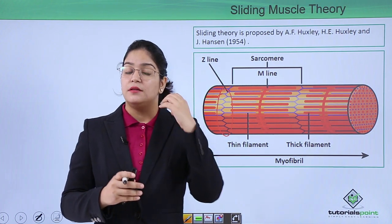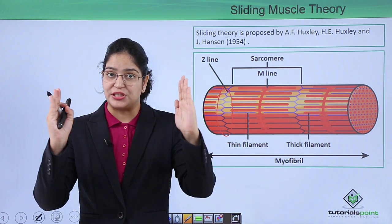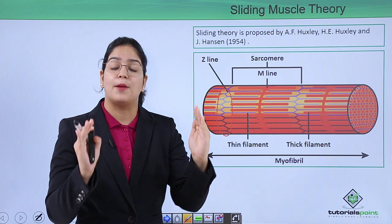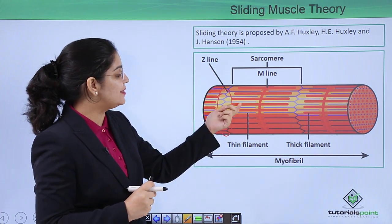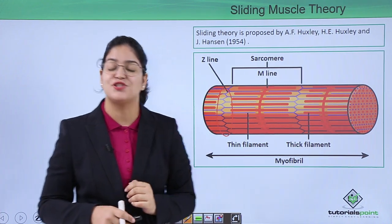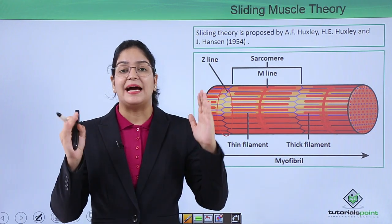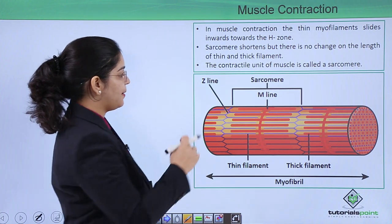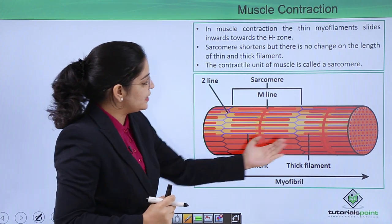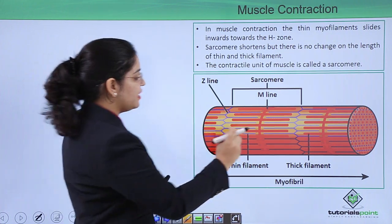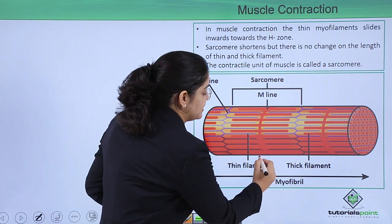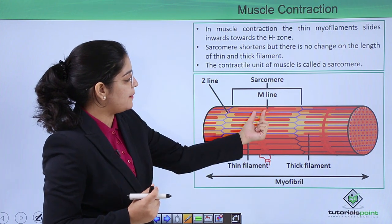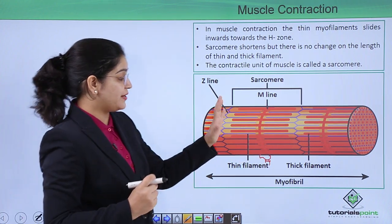When I say contraction, the first thing that comes to mind is that contraction means something becoming smaller. So does the sarcomere contracting mean these thin and thick filaments are becoming smaller? Actually, no — they are not becoming smaller, but they are coming closer to each other. The midline between the sarcomere is known as the M line, and the space where only myosin is present is called the H zone — a zone where no actin is present.